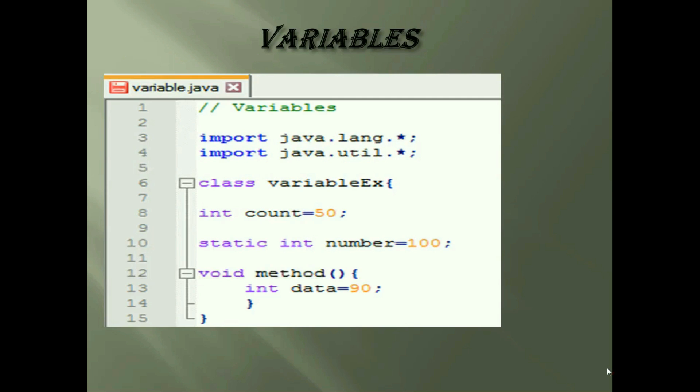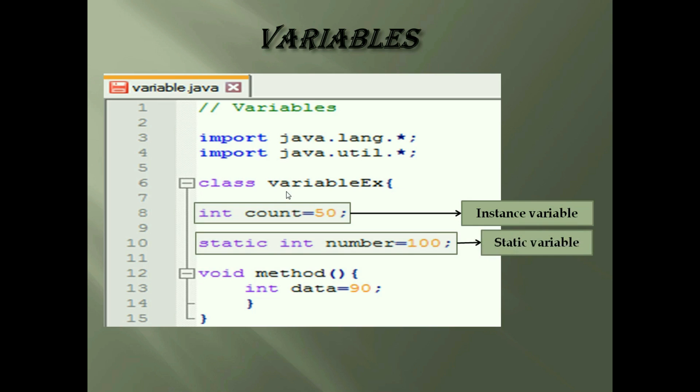Let's see one example to understand the kinds of variables in Java. First, we can see variable name count is initialized with integer value 50 is instance variable which is declared inside the class but outside the method, and it is not declared as static. Next one is number variable which is initialized with 100. This variable is declared as static, it cannot be local. And the third one is local variable, the variable name is data which is declared inside the method. So this is all about Java variables.